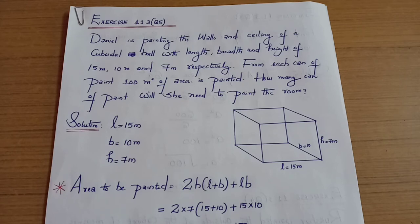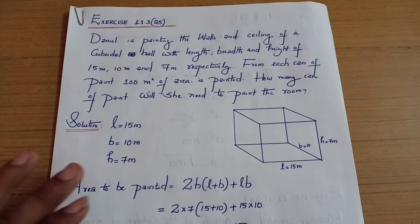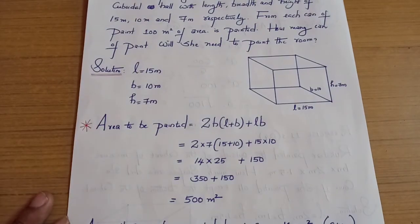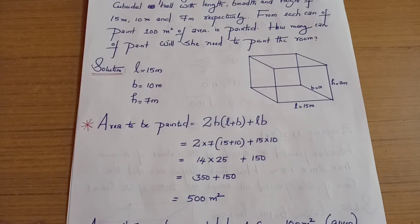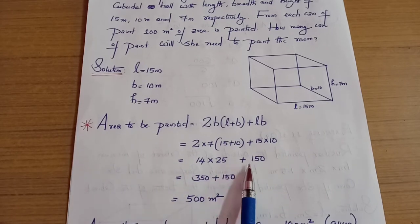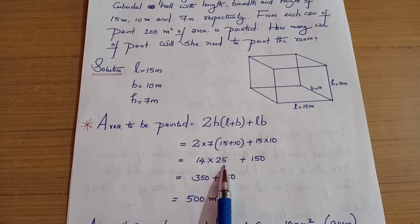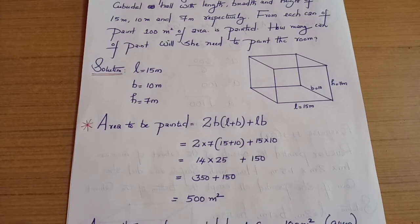The formula is: 2H(L + B) + LB. That is 2 into 7 into (15 + 10) plus 15 into 10. So 14 into 25 plus 150, which gives 350 plus 150. That is 500 meter squared area to be painted.